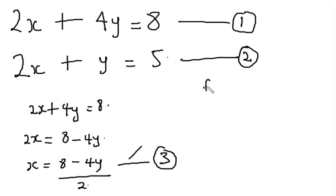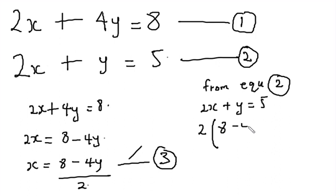From equation 2, we have 2x plus y is equal to 5. Next, we have to replace x with this value here. So that will be 2 times open bracket 8 minus 4y over 2 close bracket plus y is equal to 5.